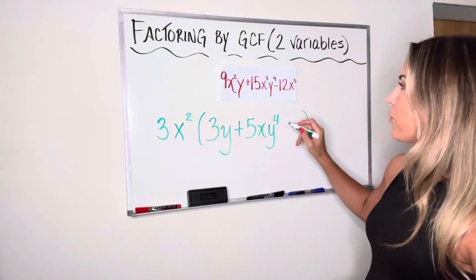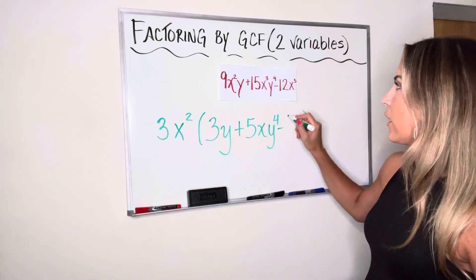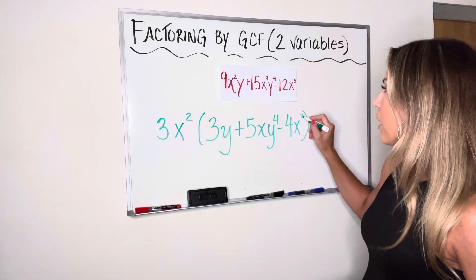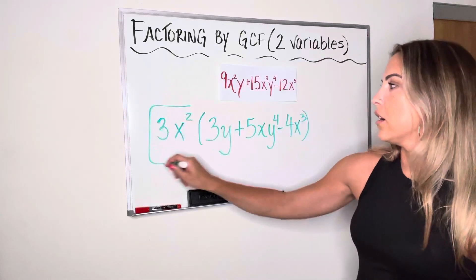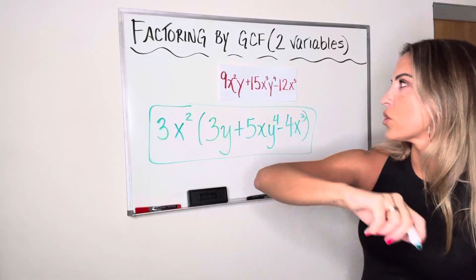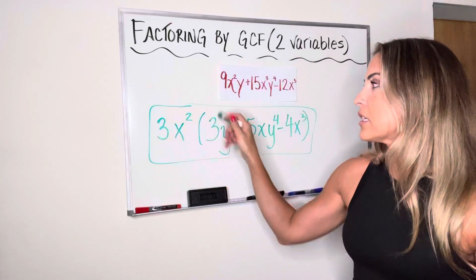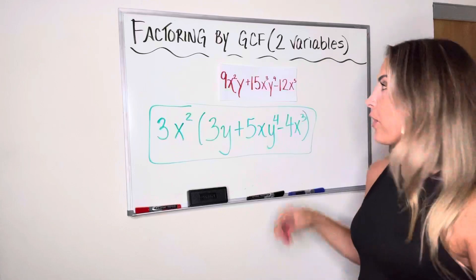Negative 12 divided by 3 is negative 4. And x to the fifth divided by x squared is x to the third. So here is my factored version of my original red expression. And as always to check, I can just distribute out and make sure I get the expression I started with.